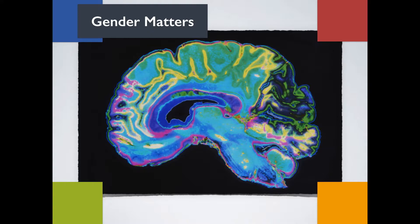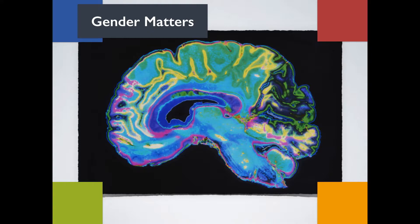Now let's think: can these brain structure differences impact social and emotional development in young children? The answer is yes. Keep in mind all of the factors we've shared up to this point, because you'll see how they all relate.